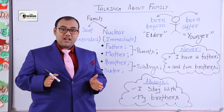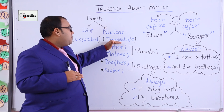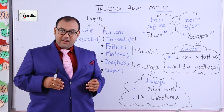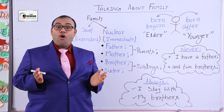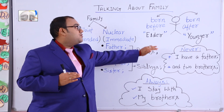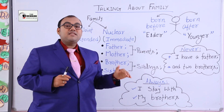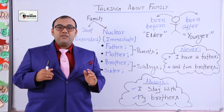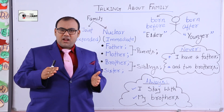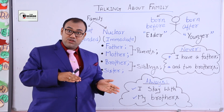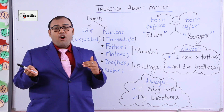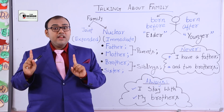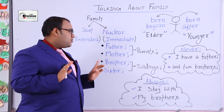If somebody asks you about your family, you are going to start with your nuclear or immediate family members. You will say 'I stay with my parents and my elder brother or younger brother.' Do not forget to say elder or younger, because that clarifies the relationship — otherwise people will keep wondering whether the brother is elder or younger to you.